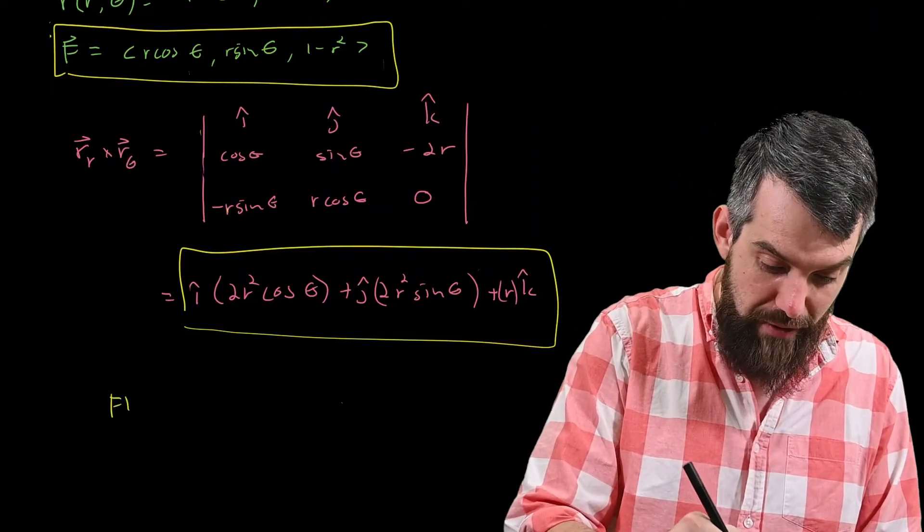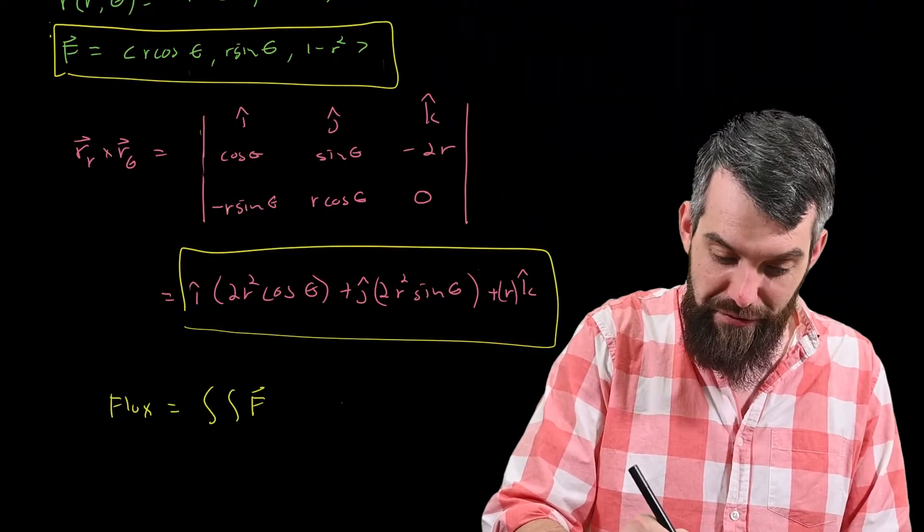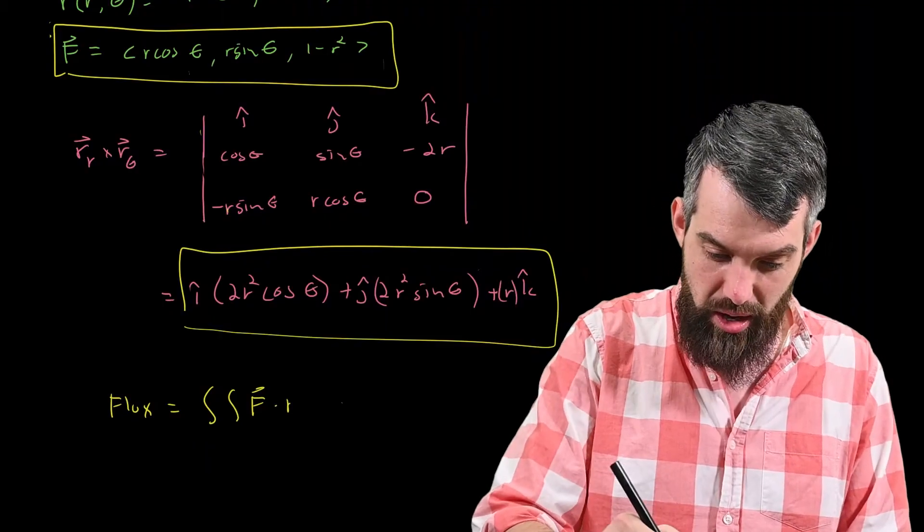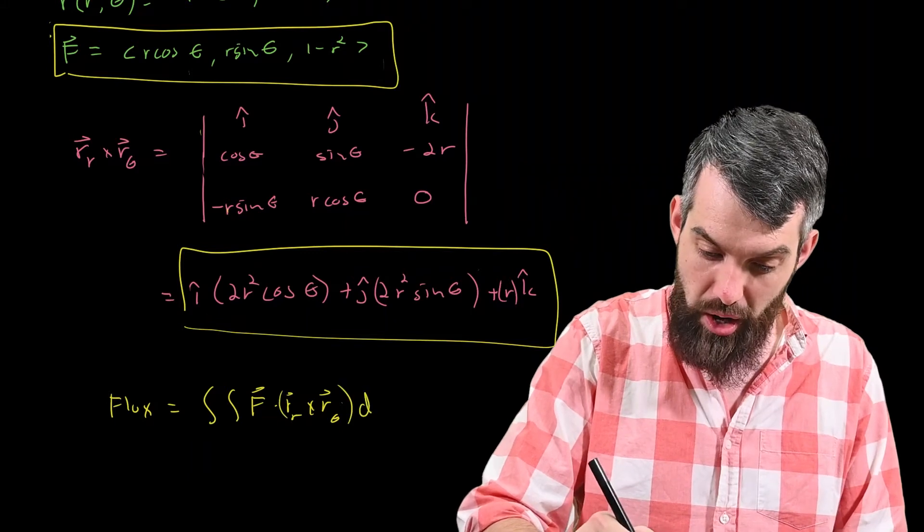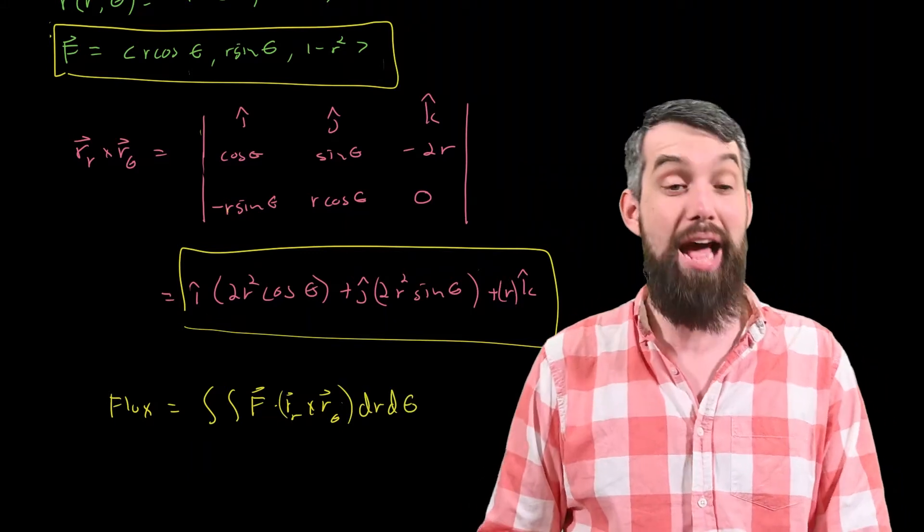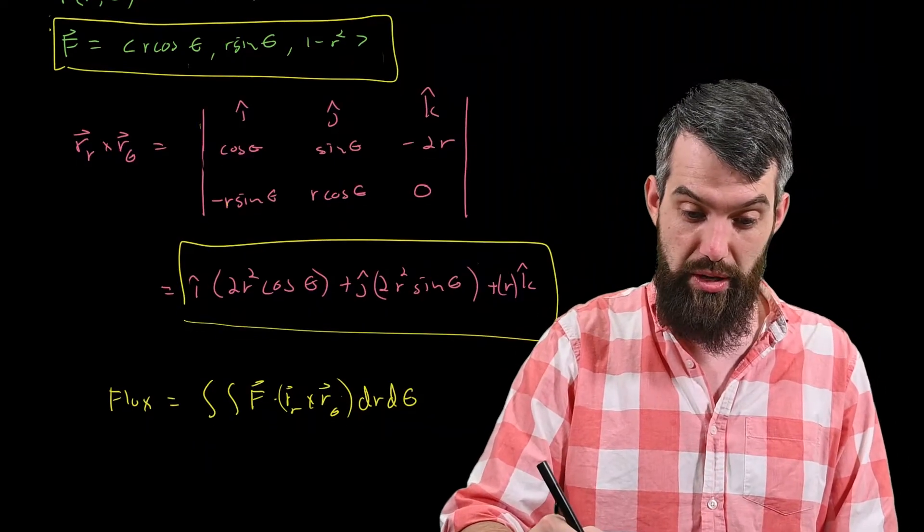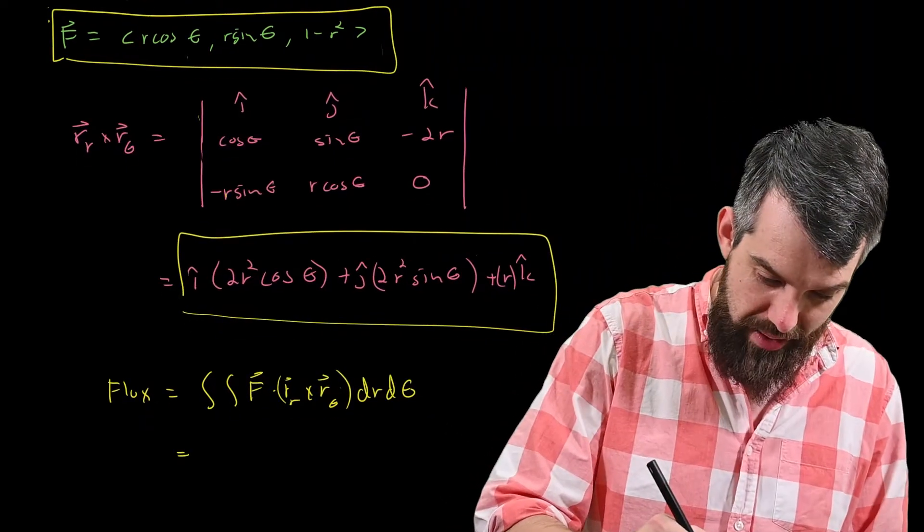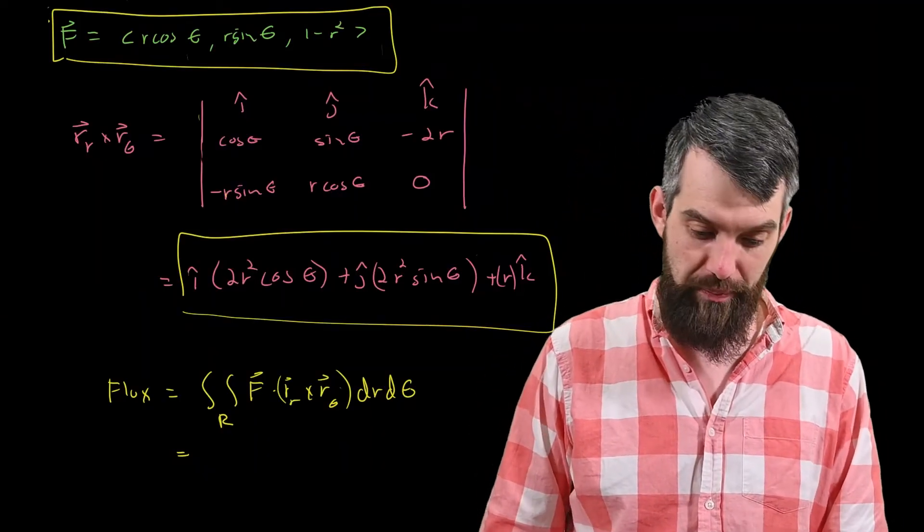So if I want to compute out the flux, which was the double integral of the F dotted with the r_r cross r_theta, dr d theta, well, I have to take the dot product of these two things that I've computed. So let's see if we can do that. I'll just put a big R down here for a region, because I haven't figured out my limits of integration yet. I'll do that shortly.